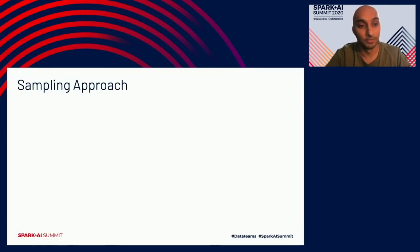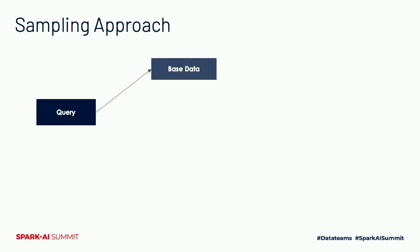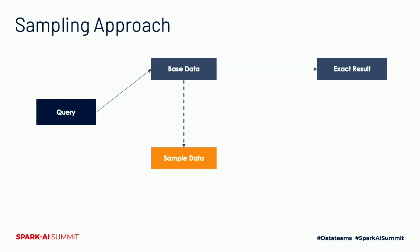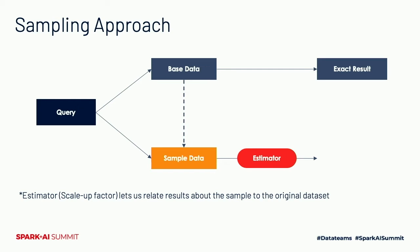In a non-sample approach, you query the base data directly and get exact results. With sampling, we generate sample data from the base data using a sampling algorithm. When a user queries the sample data, we use an estimator — a scalar factor also generated as part of the sample data — to scale the results back to the original dataset, giving approximate results relatable to exact results.